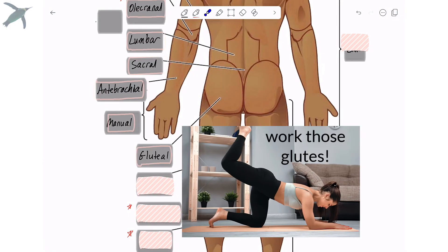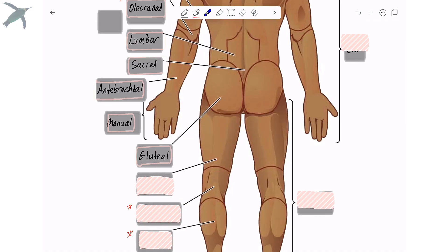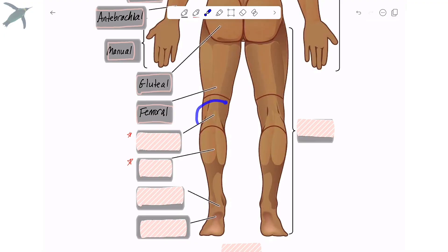All right, this region most people know. That is the gluteal region. And again, like the anterior side, this is the femoral region. This is a tricky one. The area behind the knee is the popliteal region. Popliteal is Latin for behind the knee.